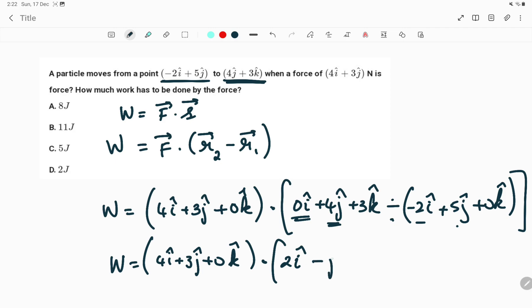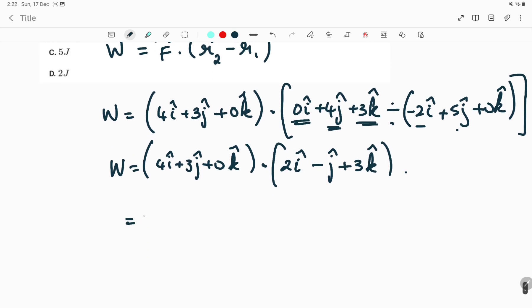4j minus 5j is -1j, and 3k minus 0k is 3k. Taking the dot product: 4 times 2 is 8, 3 times -1 is -3, 0 times 3 is 0.